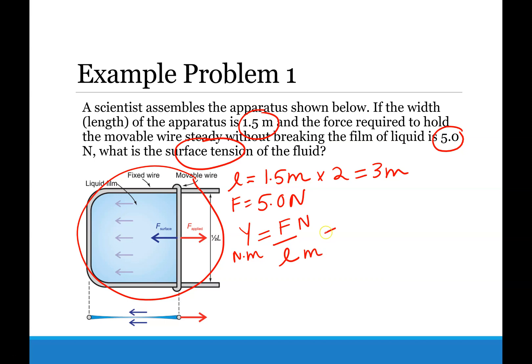And so at this point we can go ahead and plug everything in since we've already multiplied our length by 2. So force is 5.0 newtons divided by 3 meters. And so 5 divided by 3 equals 1.66 repeating newton meters.